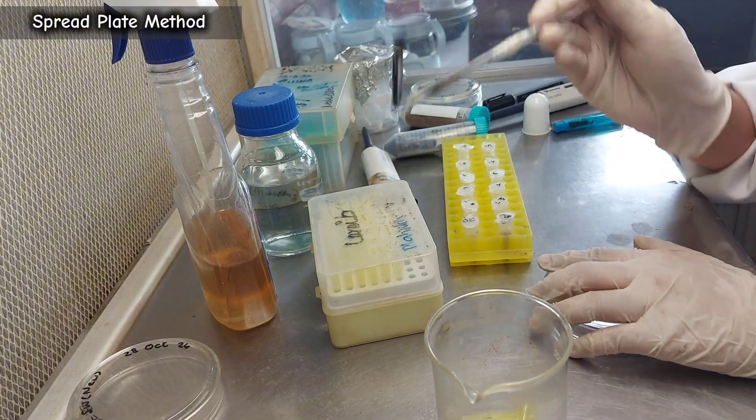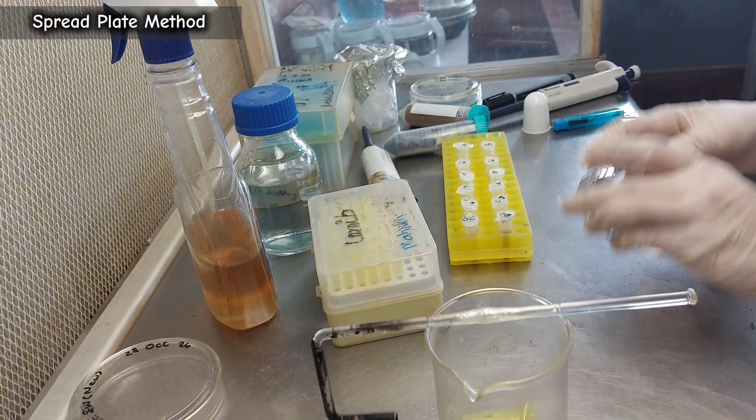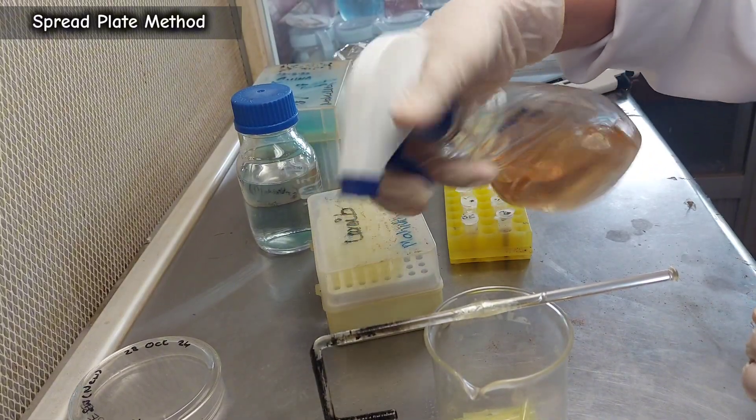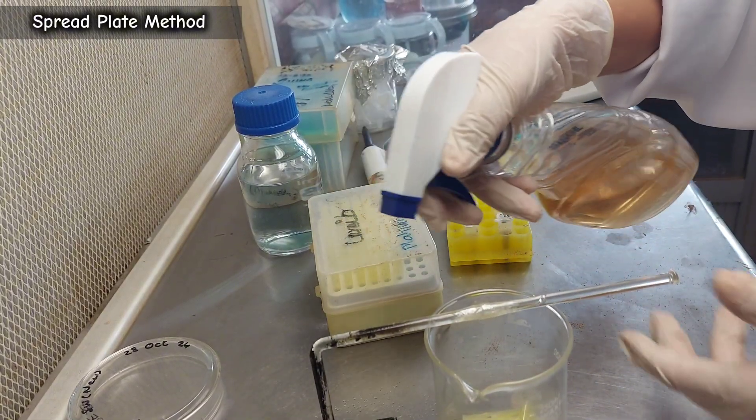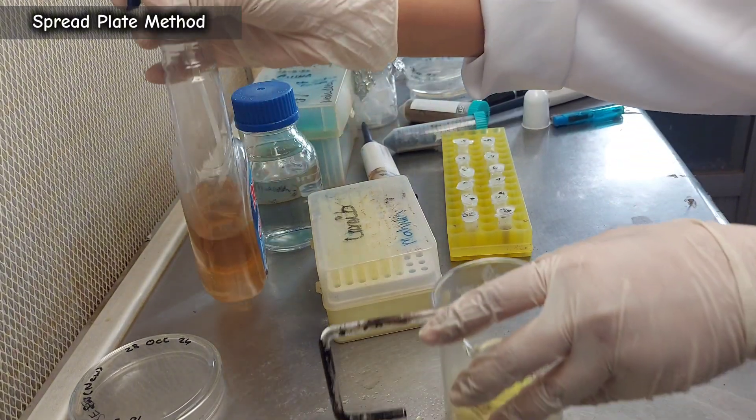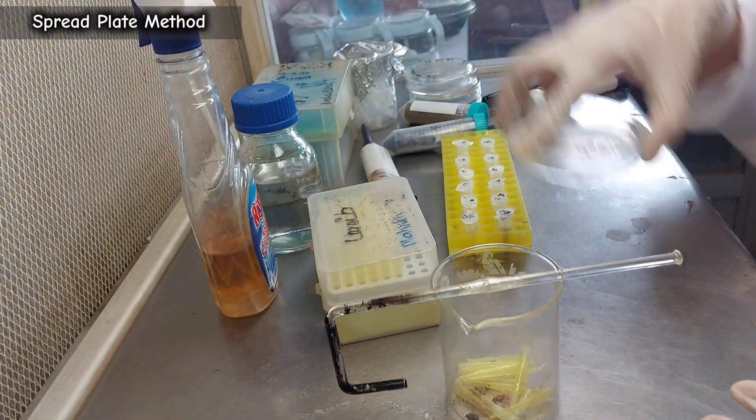Repeat this step for the other dilutions, sterilizing the spreader after each use. In this demonstration, we will plate dilutions from 10 to the power of negative 3, 10 to the power of negative 4, and 10 to the power of negative 5.